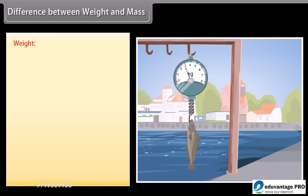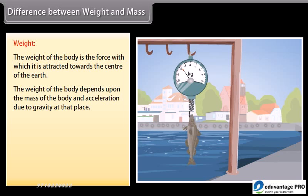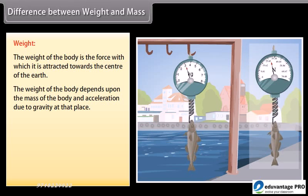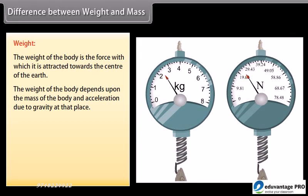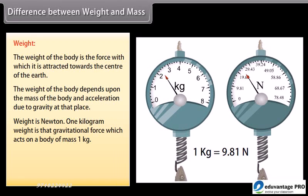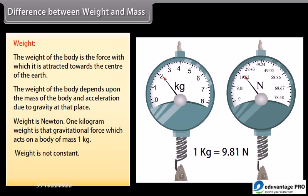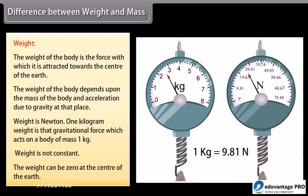Weight: The weight of a body is the force with which it is attracted towards the center of the earth. The weight of a body depends upon its mass and the acceleration due to gravity at that place. Weight is measured in Newtons — one kilogram-weight is the gravitational force which acts on a body of mass one kilogram. Weight is not constant and can be zero at the center of the earth.